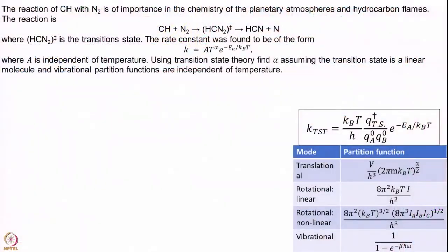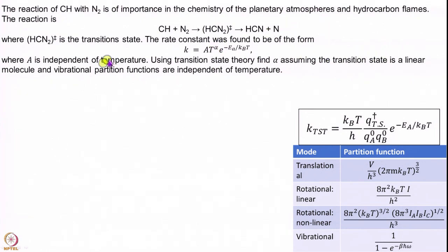The next problem involves the reaction CH plus N₂ going to a transition state to HCN plus N — important for atmospheric chemistry. People experimentally found that the rate constant fits a particular formula with parameter alpha. Using transition state theory, estimate what alpha must be. Assume the transition state to be linear, and that rotational, vibrational, and electronic partition functions are independent of temperature. Take a pause and calculate alpha.